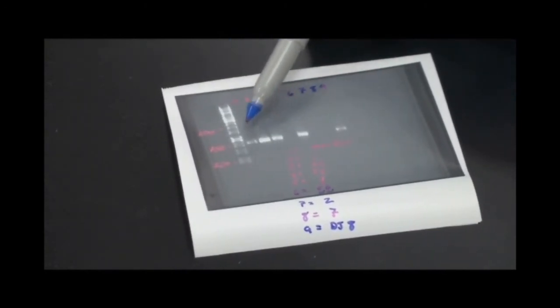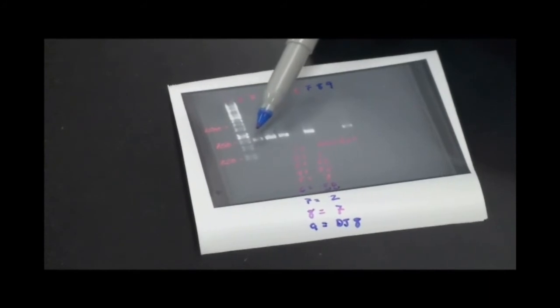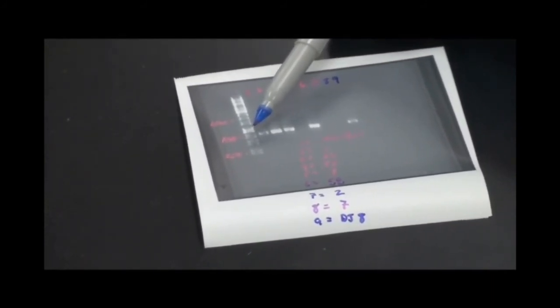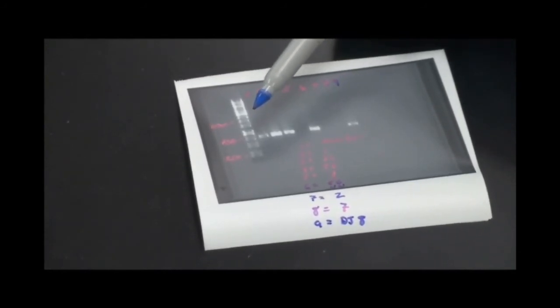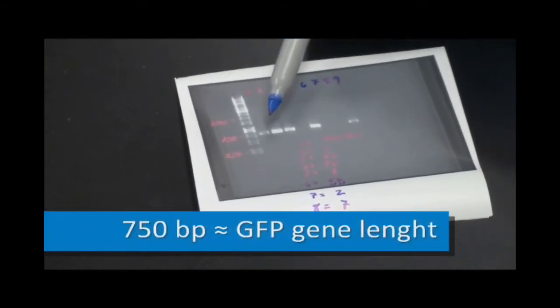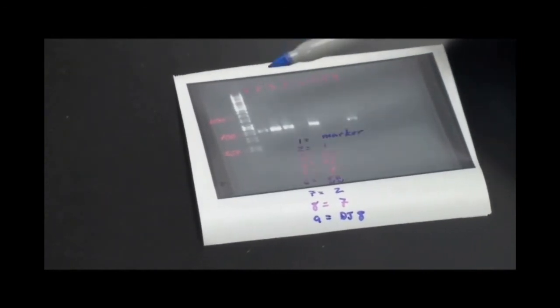And you can see that some of the samples have a band that occurs. The band, if it does occur, is occurring at the same spot at 750 base pairs. If you go back and check your manual, you'll see that about 750 base pairs is the expected size for the GFP gene. So that's good news. That group did successfully amplify their PCR product.